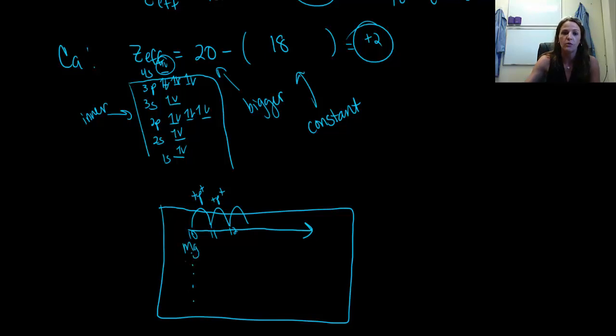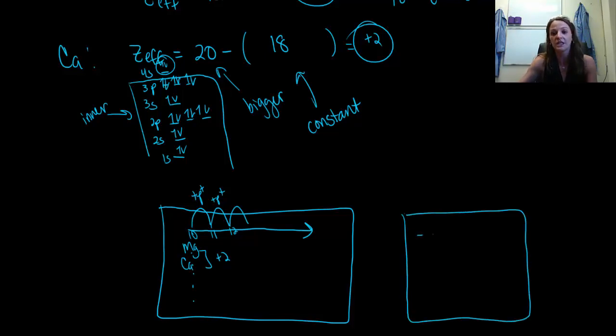And so what's going to happen is as we go across that period, our effective nuclear charge is going to slowly get bigger. But what we see, and what we just saw here, is that as we go down a group, nothing changes. So we have magnesium here, we have calcium here, all of these have the plus two charge. So if you were to write out an overall trend for effective nuclear charge, we would literally see that it increases as we go across the period, and it stays constant as we go down.